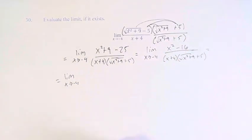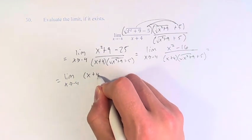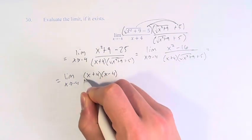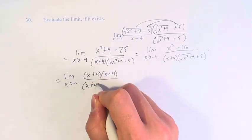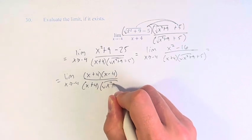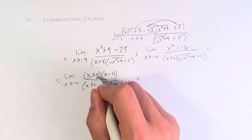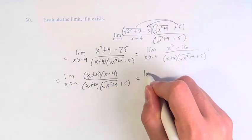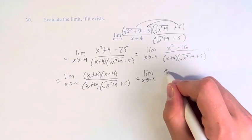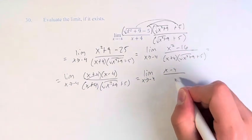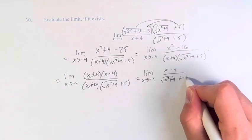x squared minus 16 is the difference of two squares, so that factors as x plus 4 times x minus 4, over x plus 4 times the square root of x squared plus 9 plus 5. The x plus 4 factors cancel, and we're left with the limit as x approaches negative 4 of x minus 4 over the square root of x squared plus 9 plus 5.